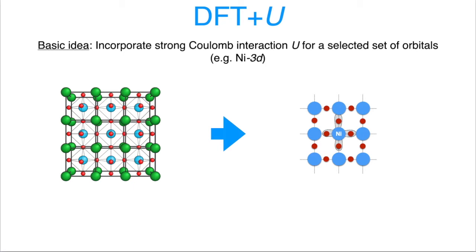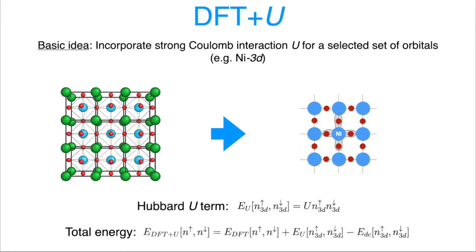The idea is simple. We take our material and for a selected set of orbitals, we explicitly take into account the strong Coulomb repulsion between electrons. For example, we pick the nickel d states and consider interactions of the form U times the number of d electrons spin-up times the number of d electrons spin-down. As soon as more than one electron occupies the orbital, they start to repel each other, and this repulsion gives rise to an energy gap.